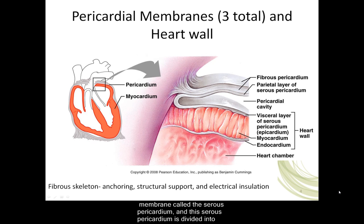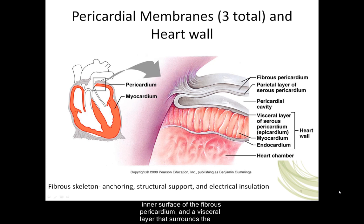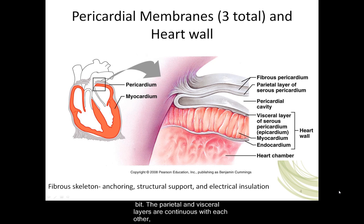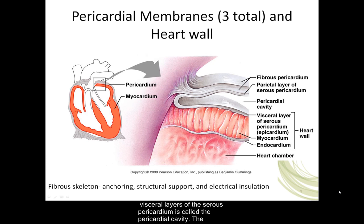The inner portion is a thin, double-layer serous membrane called the serous pericardium, and this serous pericardium is divided into two layers. There is a parietal layer of serous pericardium that lines the inner surface of the fibrous pericardium, and a visceral layer that surrounds the surface of the heart. This is also called the epicardium. The parietal and visceral layers are continuous with each other and are attached to the great vessels. The thin space between them is called the pericardial cavity. The serosal fluid protects the heart by acting as a lubricant, reducing the amount of friction generated as the heart beats.